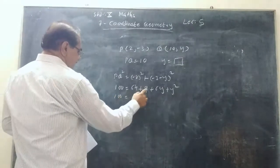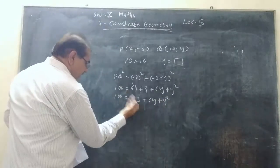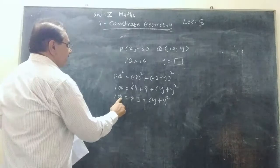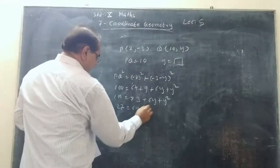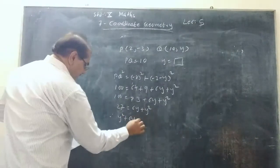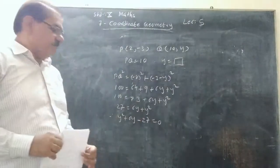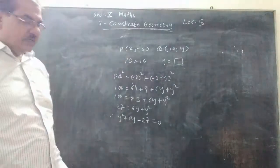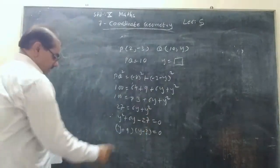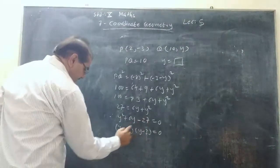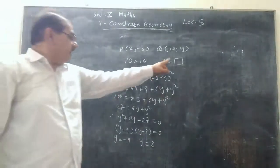So 100 = 64 + 9 + 6y + y². That is 100 = 73 + 6y + y². So 100 - 73 = 27 = y² + 6y. Therefore y² + 6y - 27 = 0. It is a degree-two polynomial, so we split the middle term. For -27 with sum +6: that is +9 and -3. So (y + 9)(y - 3) = 0. Therefore y = -9 or y = 3. So these can be the values of y.